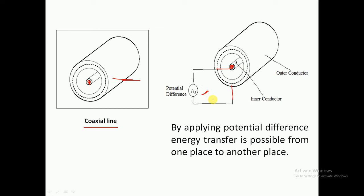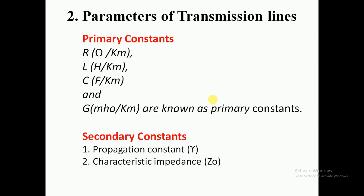This is the main idea about transmission lines, and as we proceed we will discuss things in more depth. Now I am going to discuss the parameters of transmission lines. We have two types of parameters: primary constants and secondary constants. For primary constants, we discuss resistance, denoted R with unit Ohm; inductance, denoted L with unit Henry; capacitance, denoted C with unit Farad; and conductance, denoted G with unit Mho — the symbol of Mho is the opposite of Ohm.